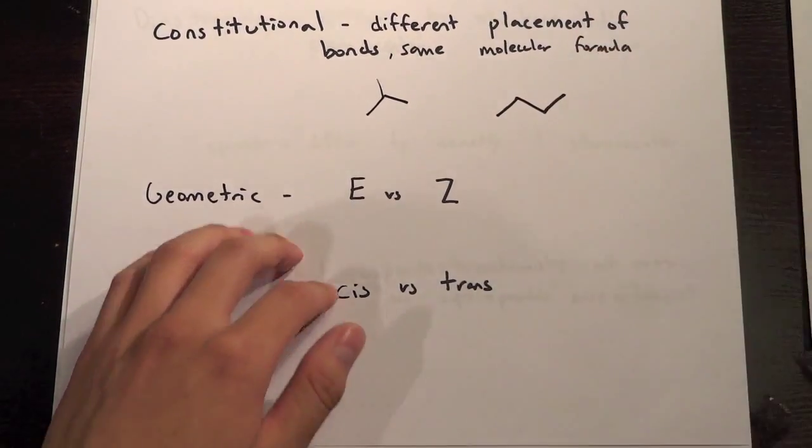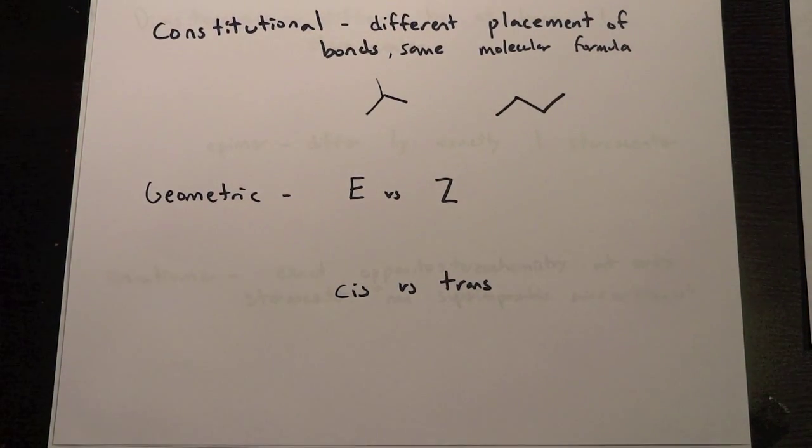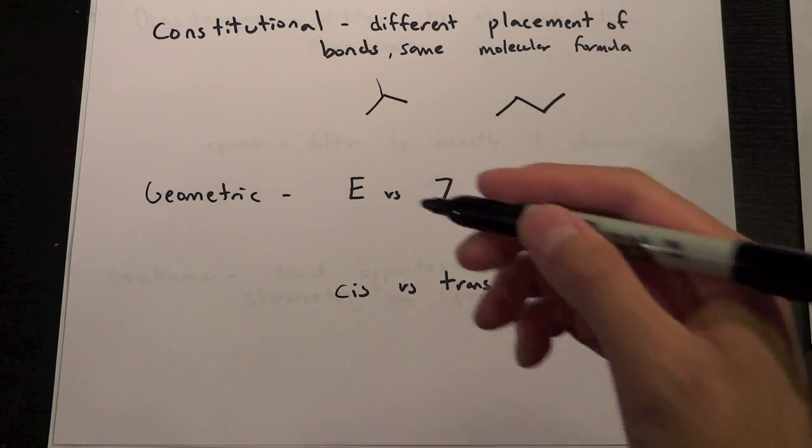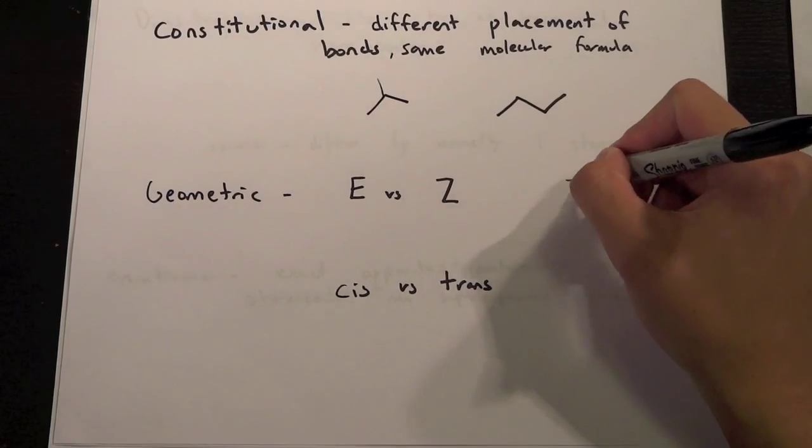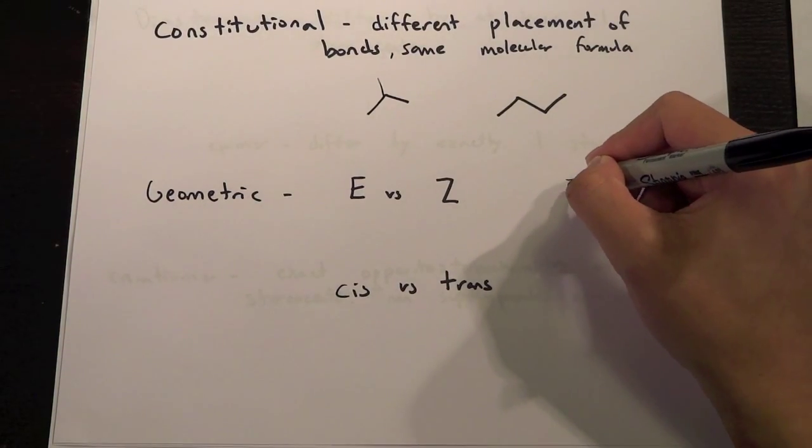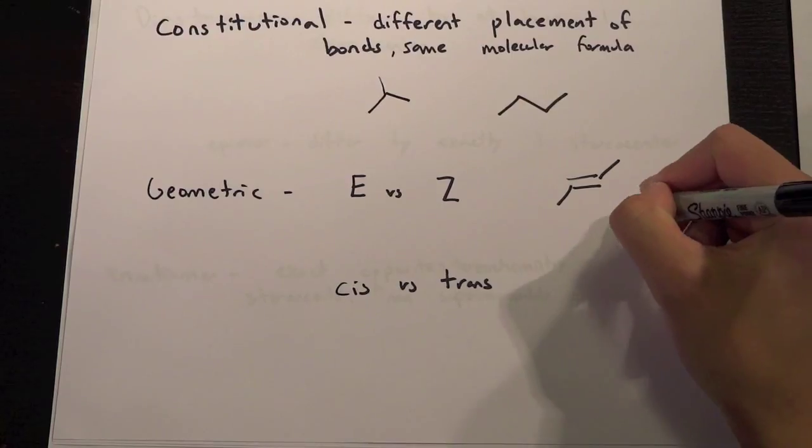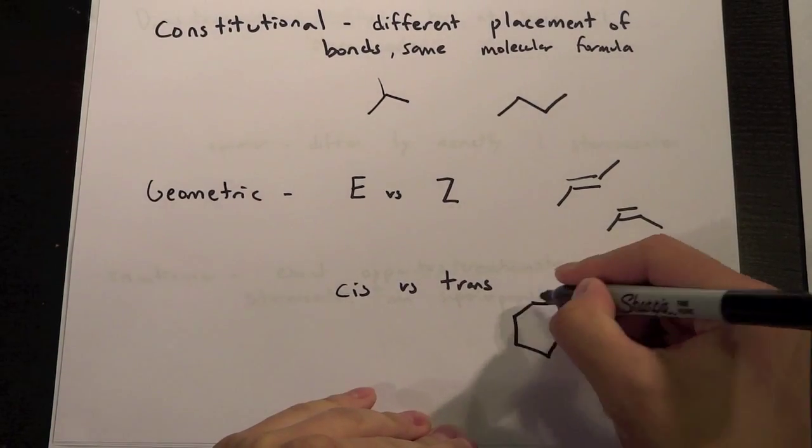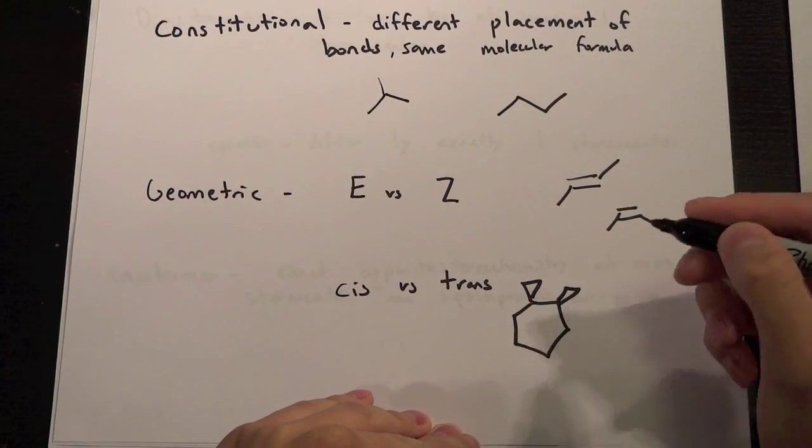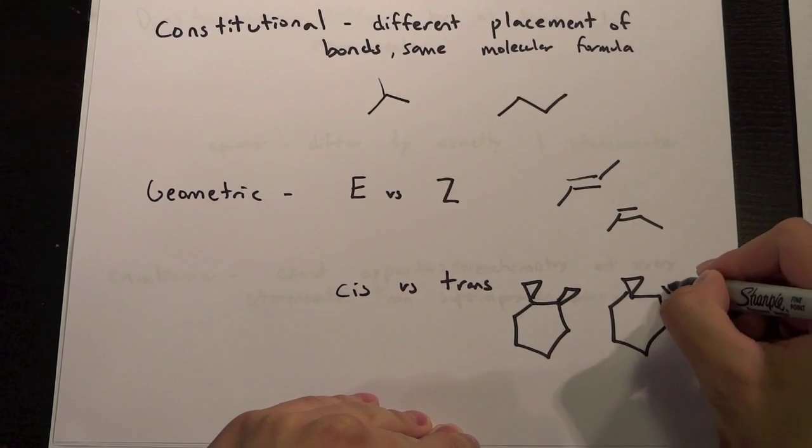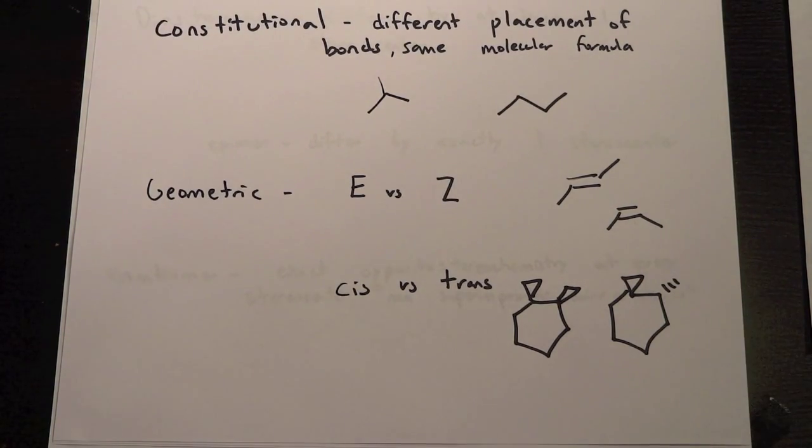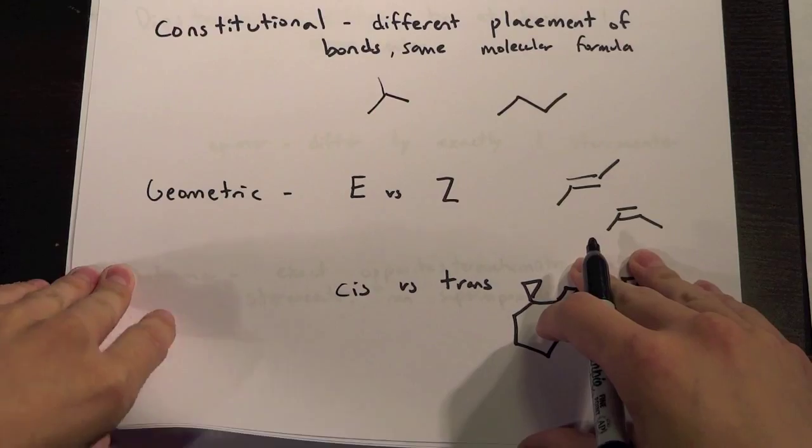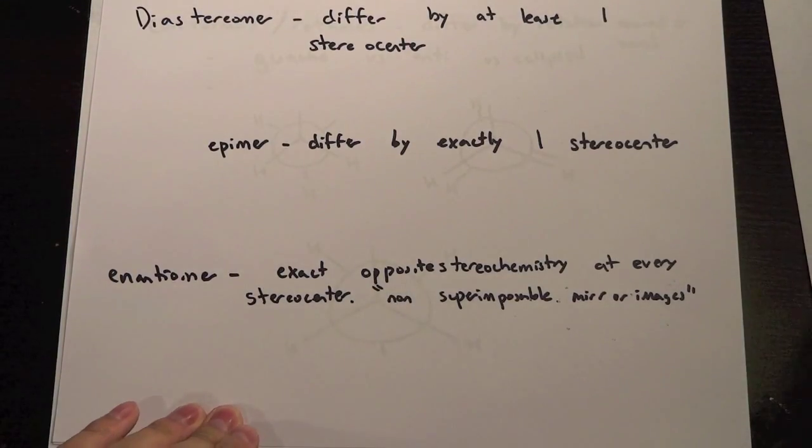And geometric isomers would be E versus Z or cis versus trans. And like we saw before, this would be something that would be E and this would be something that would be Z on the same side. And cis versus trans would be something like this, that's cis, and that's trans. So opposite would be trans, the same going on the same side would be cis.